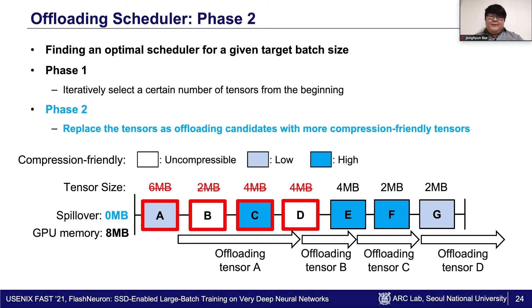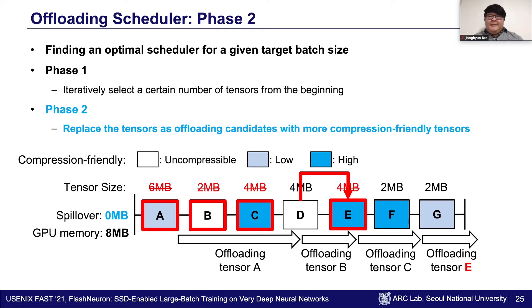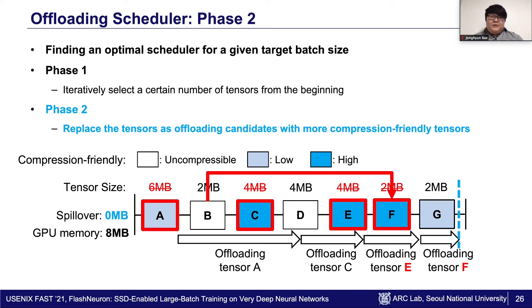The second phase replaces the tensors already selected as uploading candidates with more compression-friendly tensors. The scheduler first inspects the last uploaded tensor D. Tensor D is incompressible, so the scheduler removes it from the uploading candidates and adds more compressible tensors. The scheduler again checks if the tensor loading time still exceeds the total forward pass time. If so, it keeps replacing already selected tensors with more compressible but not yet selected tensors. The details for this procedure are explained in the paper. In this example, replacing tensor B with tensor F satisfies the condition, and the scheduler is set to upload tensors A, C, E, and F.